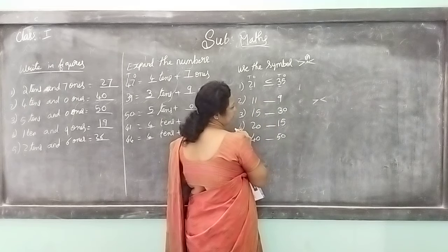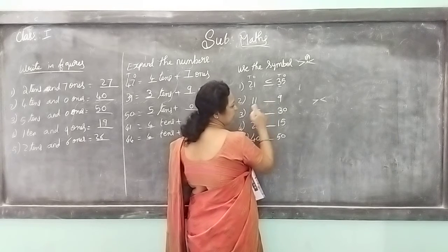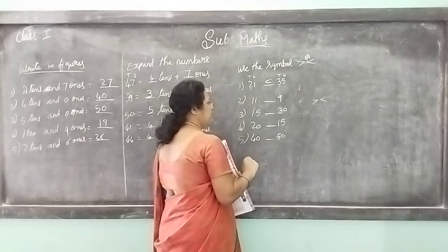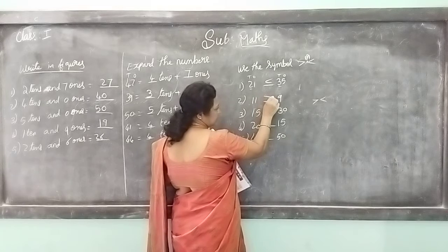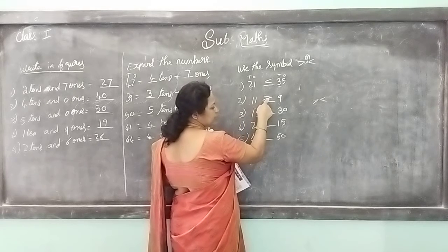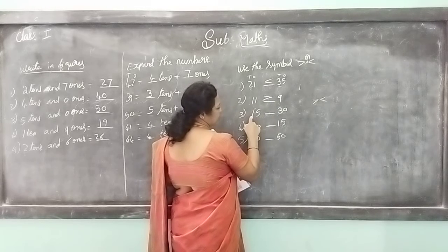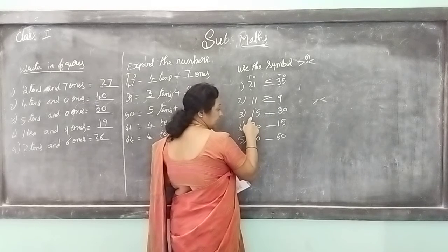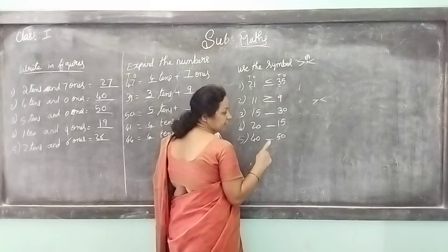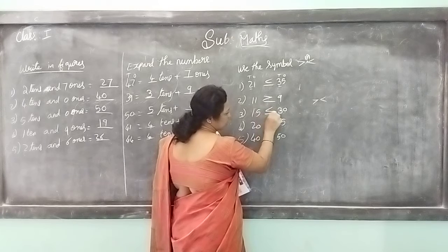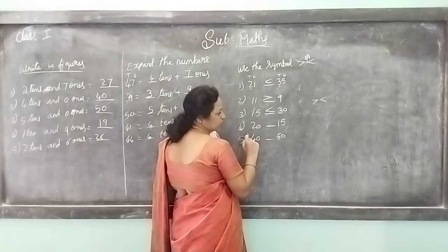11 and 9 - which is greater? 11 is a 2-digit number, 9 is a single digit. So 11 is greater. Turn the symbol to whichever side the greater number is. 15 and 30 - in the tens place, 15 has 1 ten and 30 has 3 tens. 3 tens is greater, so turn the symbol toward the greater side.